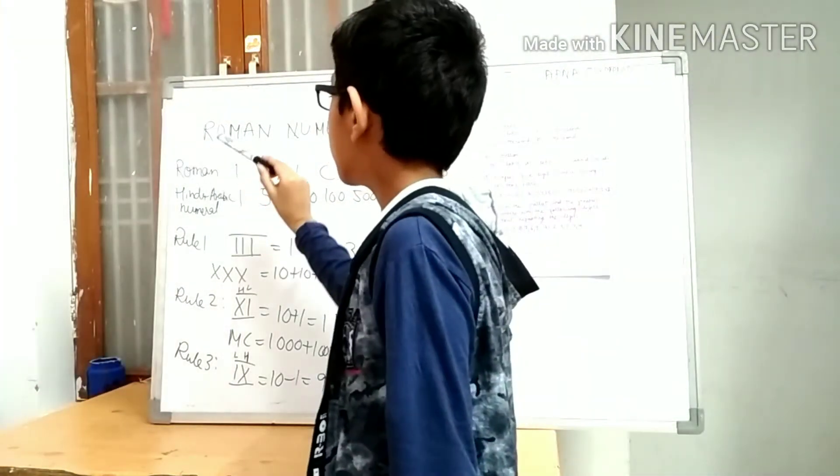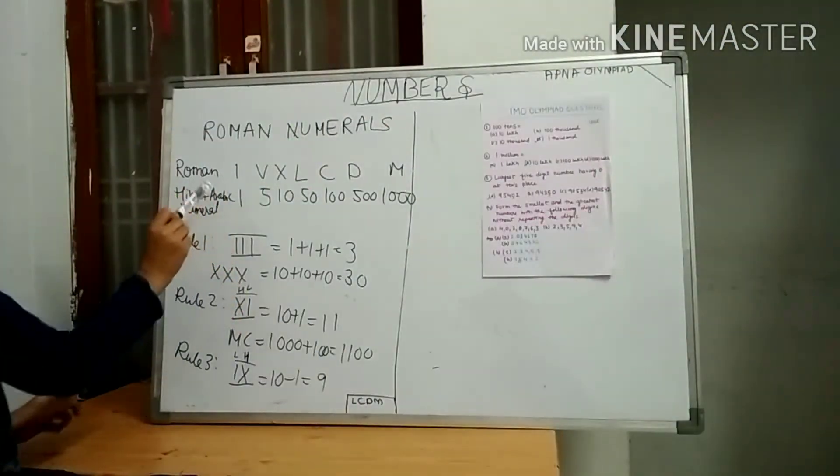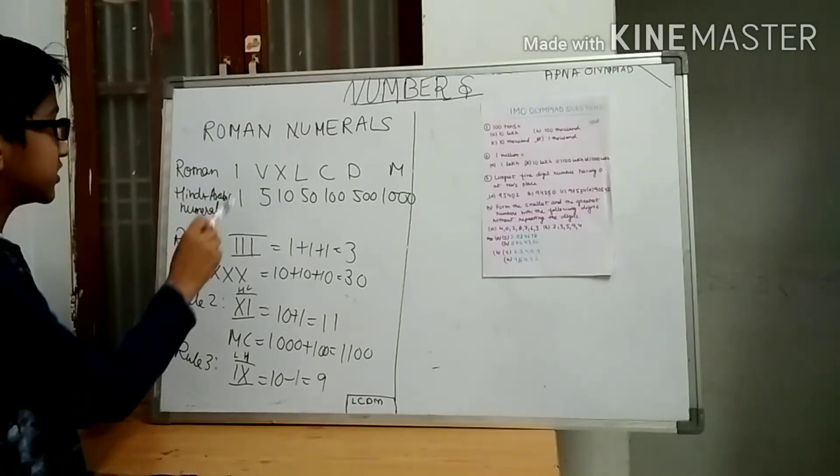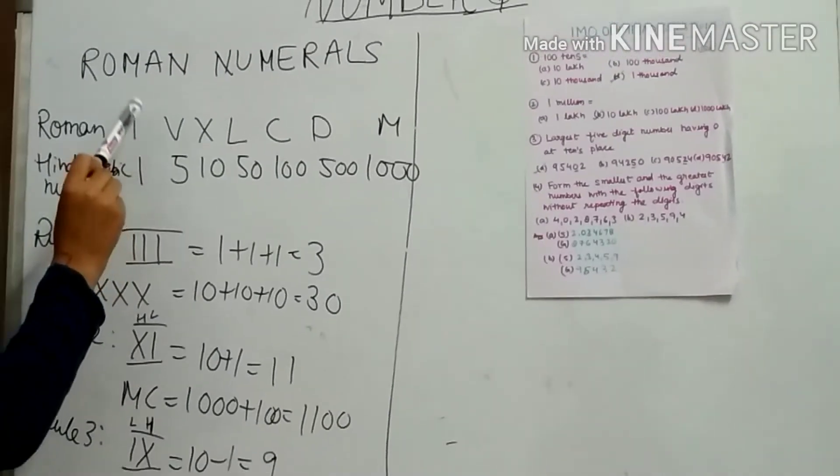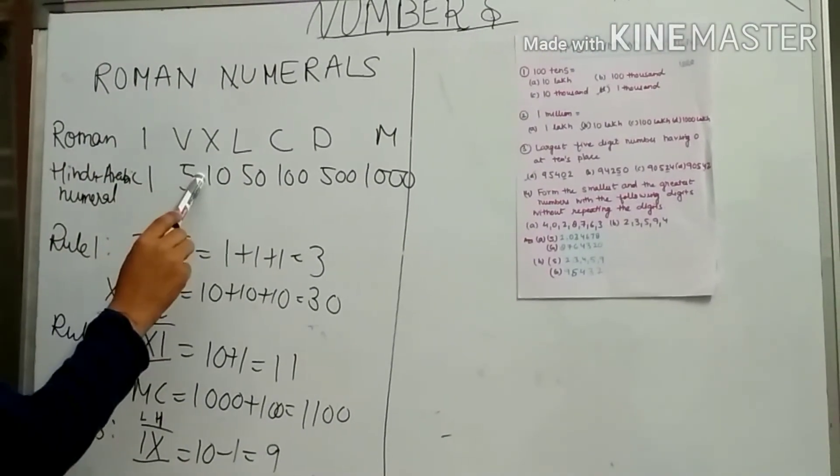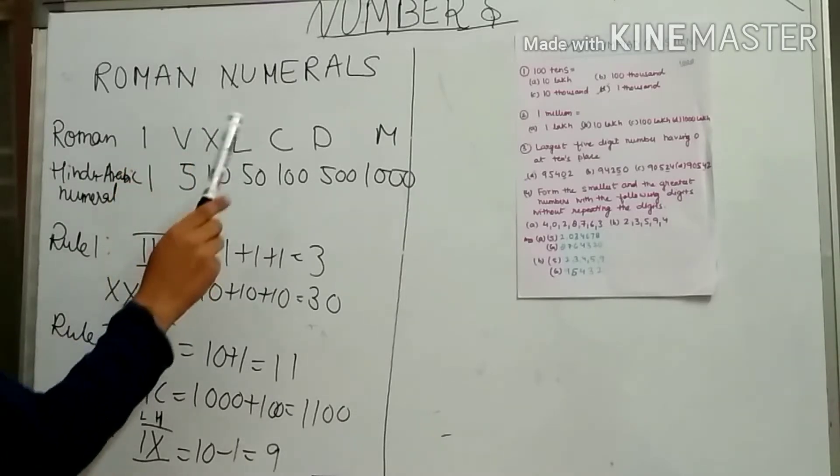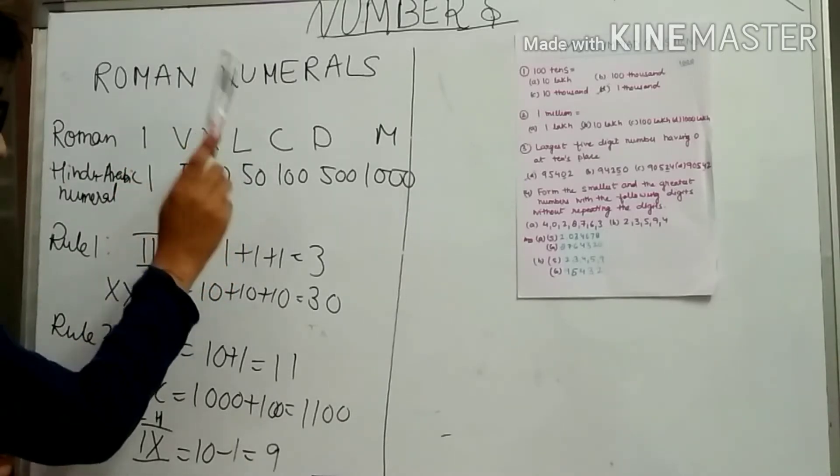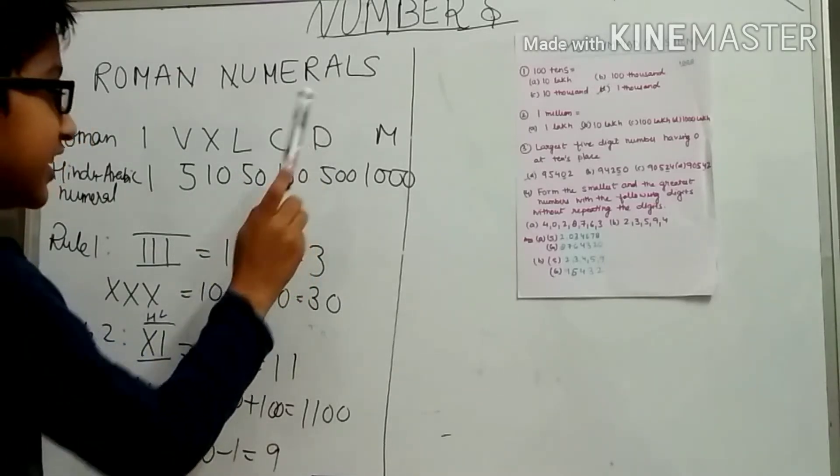Now we will discuss Roman numerals. Roman and Hindu-Arabic numerals: in Hindu-Arabic numerals, 1 is written as I, 5 is written as V, 10 is written as X, 50 is written as L, 100 is written as C, 500 is written as D, 1000 is written as M.